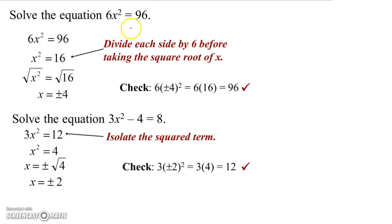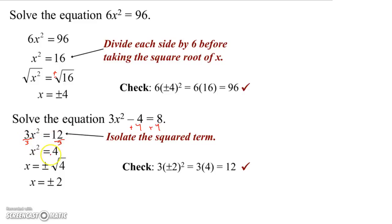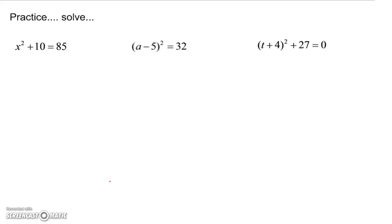If you had 6x squared equals 96, we divide both sides by 6 to get x squared equals 16. Then take the square root of both sides — remembering it's plus or minus — giving plus or minus the square root of 16, which is plus or minus 4. For the second one, add 4 to both sides to get 3x squared equals 12, then divide both sides by 3 to get x squared equals 4. Take the square root — x equals plus or minus the square root of 4, which is plus or minus 2. And if you check those, both numbers actually solve that equation.